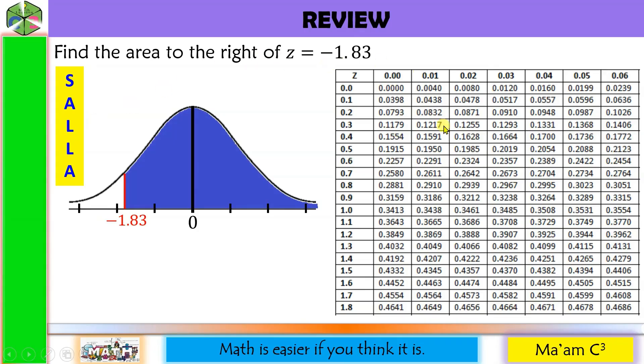Step 3, we locate our Z value in our Z table. Again, we do not have negative values here. So instead, we're going to look for positive 1.8, the first two digits. And then the hundredths digit is on the top row. Here it is. Let us get the intersection.